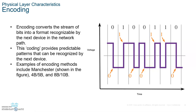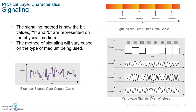The old 10-base-T network used the Manchester Technique. Now, 100-base-T NICs — fast Ethernet — use 4B/5B encoding. That means they're coding every four bits with a 5-bit code. We don't have to get into that in great detail, but it's good to know.